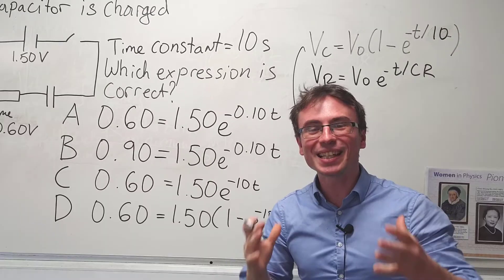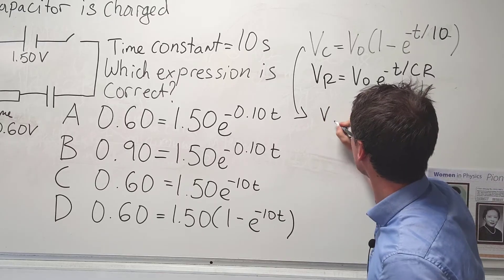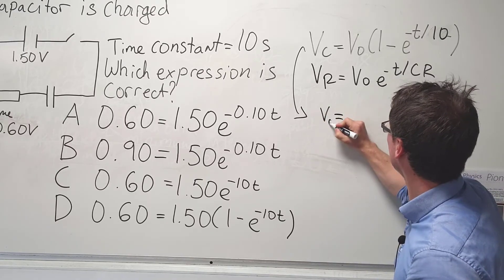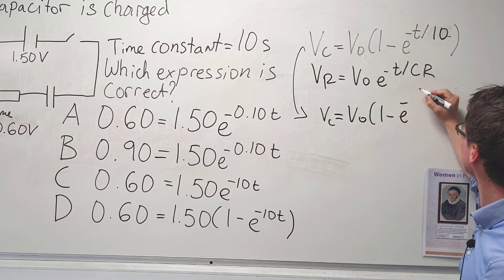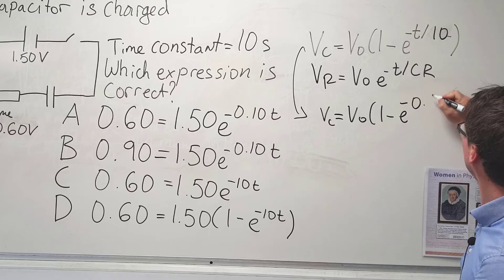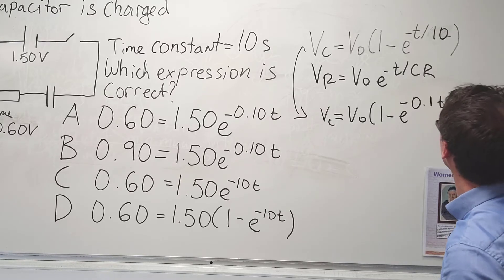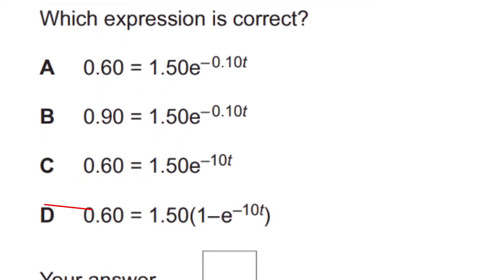This would actually make the expression for the potential difference across the capacitor to be equal to V naught 1 minus e to the minus 1 over 10, which is 0.1 times t. So D cannot be correct because we have a minus 10.